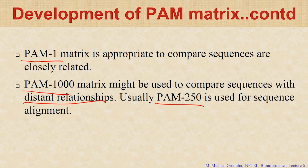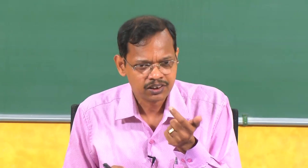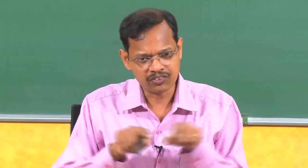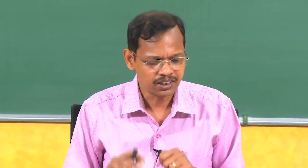Now we will see how we derive the PAM matrix. What essentially is the PAM matrix? What is the expansion? Point Accepted Mutation matrix. How does the matrix look? It is a 20 by 20 matrix. Are all 400 elements different, or is anything similar? It is symmetric — a diagonal matrix — for the reason I explained earlier.